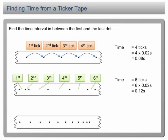the time is 6 times 0.02 second equal to 0.12 second. The time from the first dot to the last dot is 0.12 second.